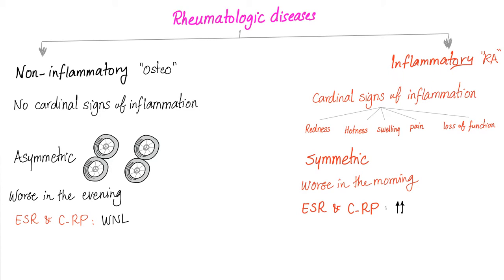Inflammatory arthritis, such as rheumatoid, is symmetrical. The right knee and the left knee are affected at the same rate — both equally bad. Why? Because we have the same antibodies, called rheumatoid factors, floating in the serum and affecting both the right and left knee equally.